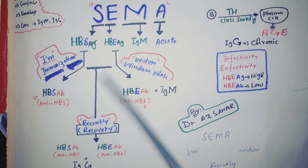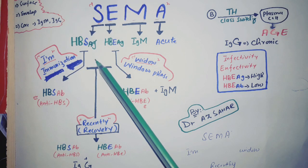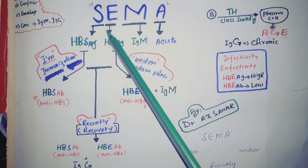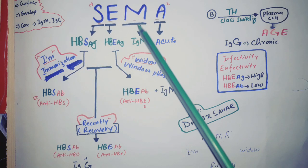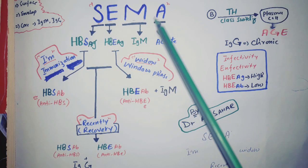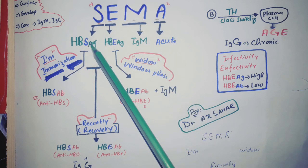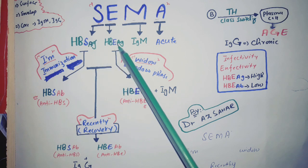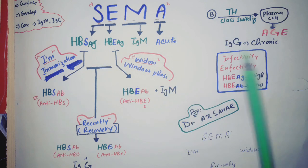So first we will have antigens and then antibodies. In the SEMA mnemonic: S is HBS antigen, E is HBE antigen, M is IgM, and A is for acute. So in acute infection we will see HBS antigen, HBE antigen, and IgM — that is for acute.